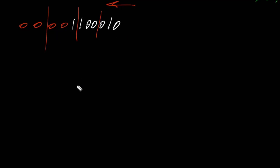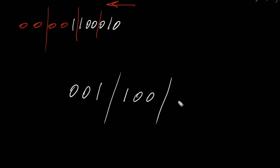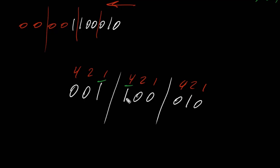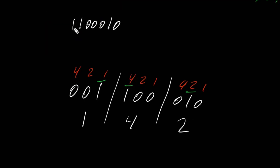Rewriting the groups: first group is 0 0 1, second group is 1 0 0, third group is 0 1 0. Placing decimal values 1, 2, 4 for each group: first group only has 1 turned on → 1. Second group only has 4 turned on → 4. Third group only has 2 turned on → 2. So binary 1 1 0 0 0 1 0 gives octal 1 4 2.